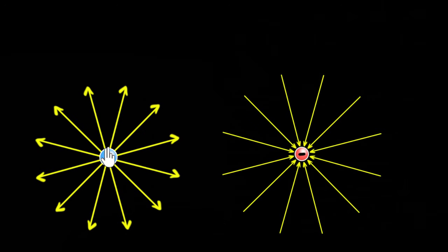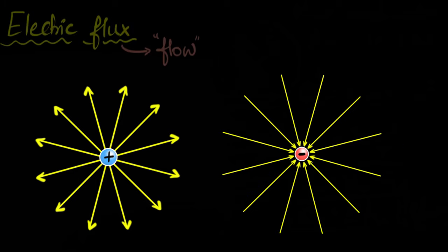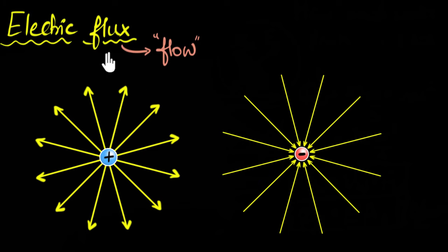You've seen electric field lines, and it's always tempting to think that something is actually flowing out of a positive charge or into a negative charge, even though there isn't any. In this video, we're going to take that temptation to the next level and figure out how to calculate how much the electric field flows through a given area. That's the idea behind electric flux — a measure of how much electric field is flowing through something, even though it's not really doing that. It's a number that tells you how much the field is flowing.